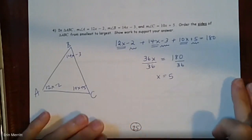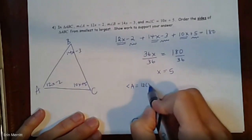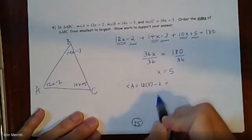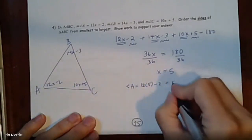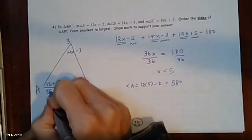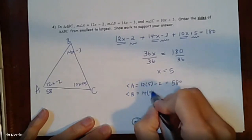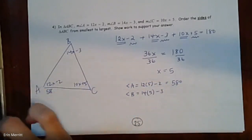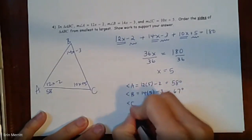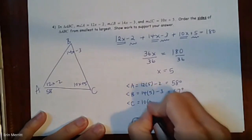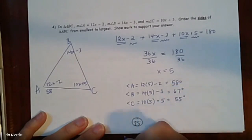Plugging x = 5 back in: angle A is 12(5) − 2 = 58 degrees, angle B is 14(5) − 3 = 67 degrees, and angle C is 10(5) + 5 = 55 degrees.